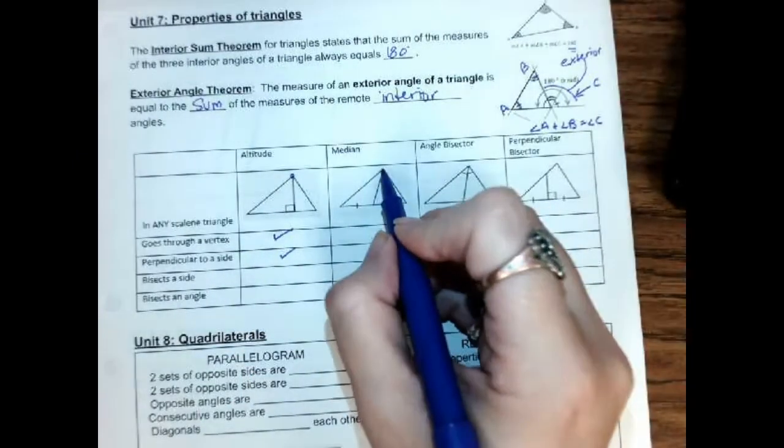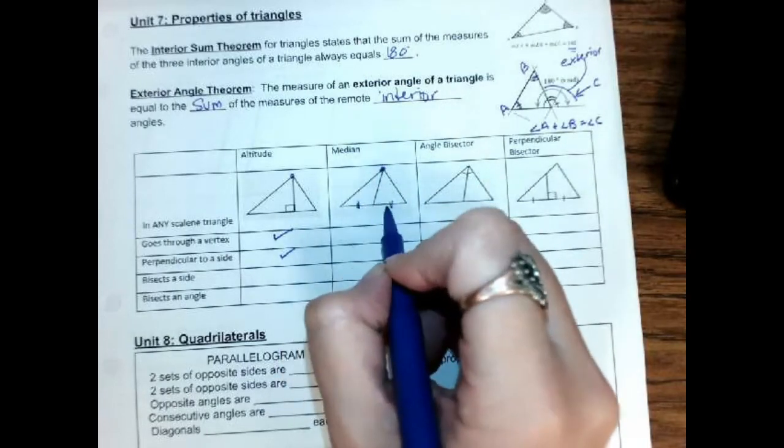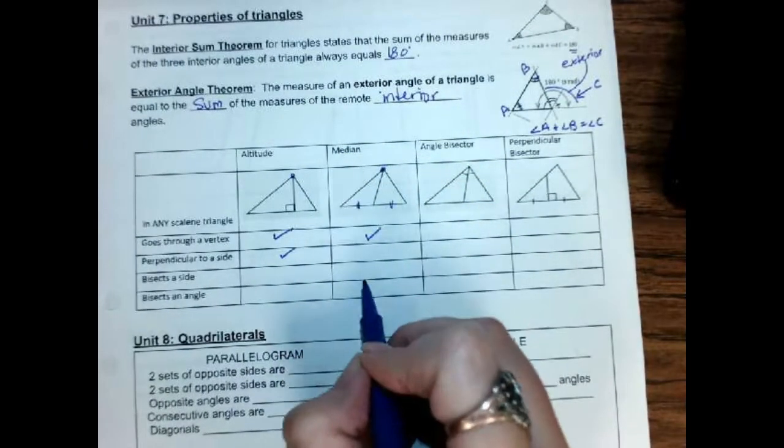A median goes through the top, and it bisects the other side. It cuts this side in half. So, it goes through the vertex, and it bisects the side.